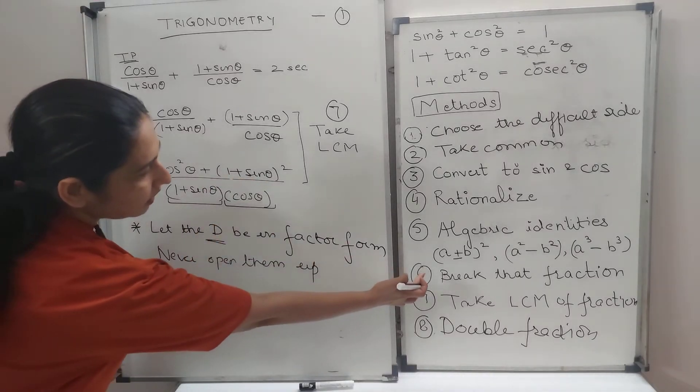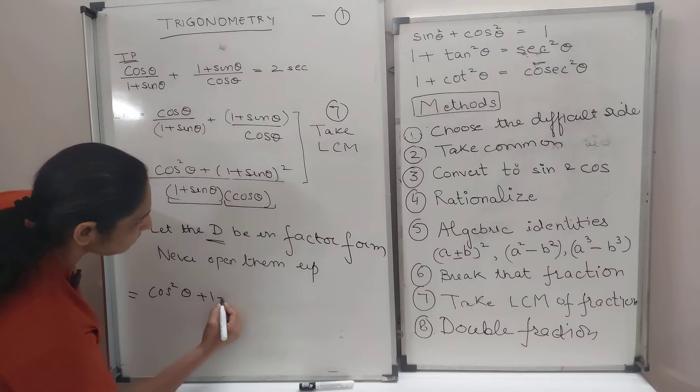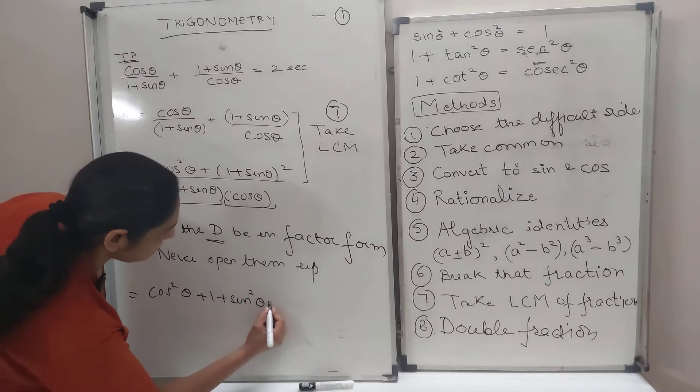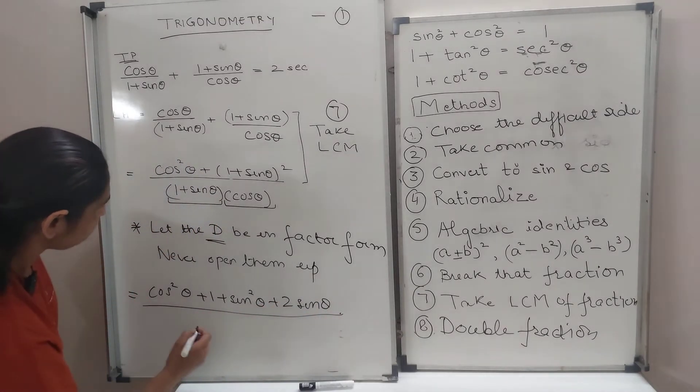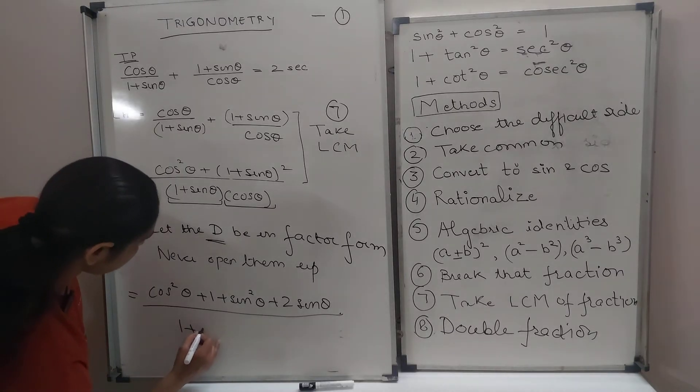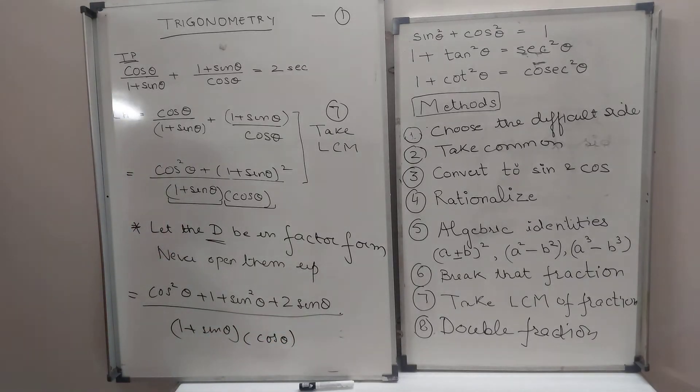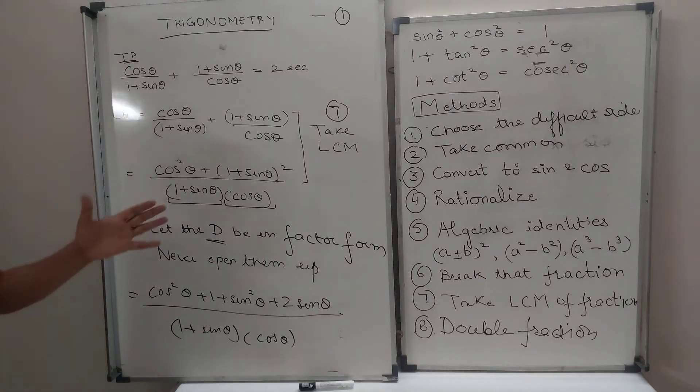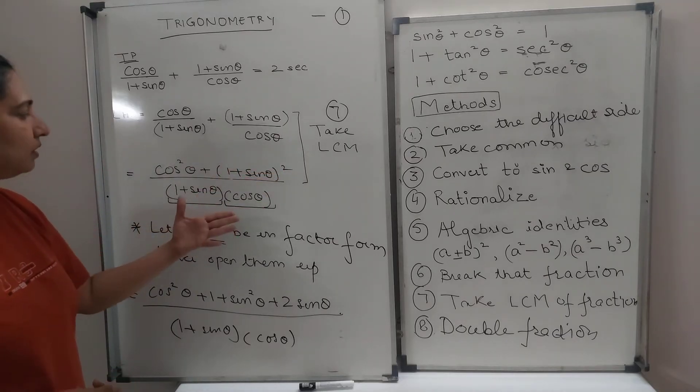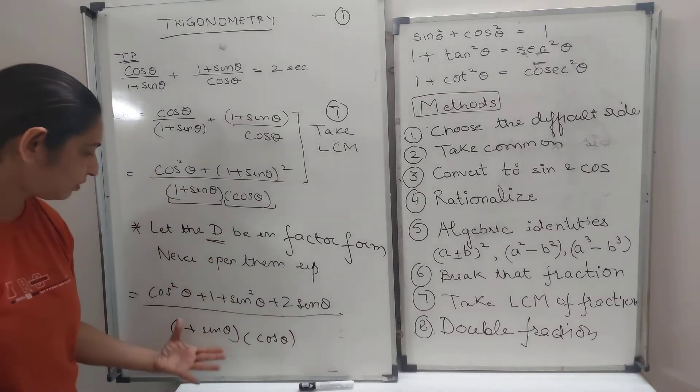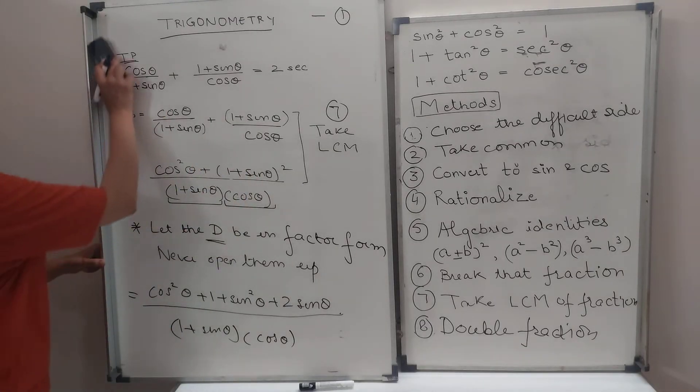Here you will use the identity A plus B whole square. So it will become this plus this plus this. And we are continuing with the denominator as it is without solving it. The only thing I have done is, I realized there are two fractions. I have taken the LCM, solved the numerator, not touched the denominator. I have not solved the denominator. Let it be. That's all I have done. I have taken the LCM and solved the numerator. Now let's go ahead.